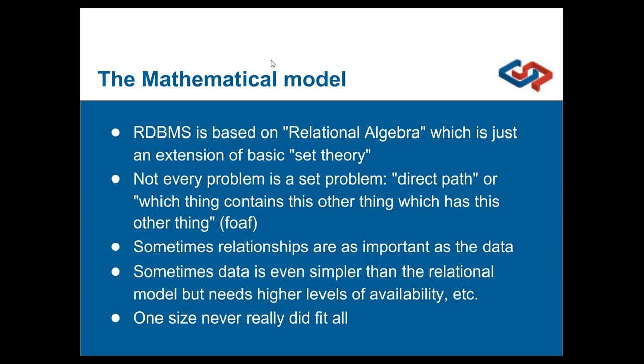Sometimes data is even simpler than the relational model but needs higher levels of availability. One size never really did fit all. When you have a system performance problem, a lot of times you look at it and it's all queuing against the database. You go through the queries and they're monsters — three levels of outer joins. If you've got more than one outer join in a query, you probably don't really have a relational algebra problem; you're working around it and trying to make your data fit in there.